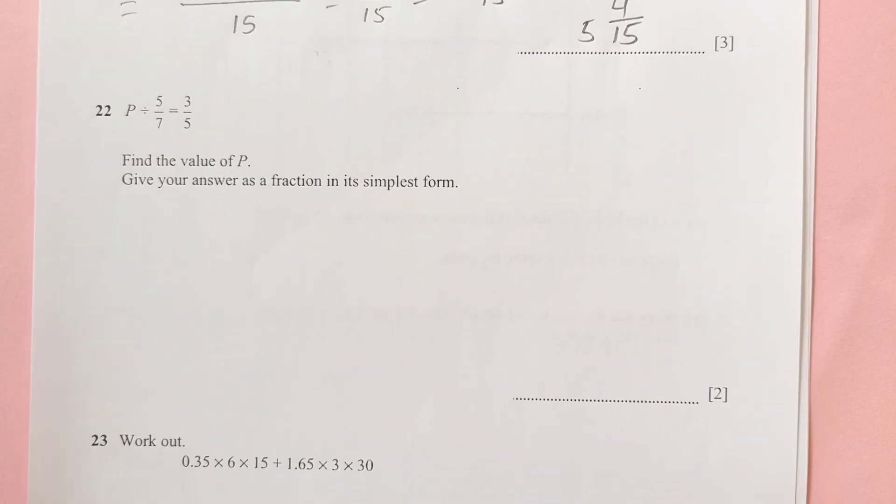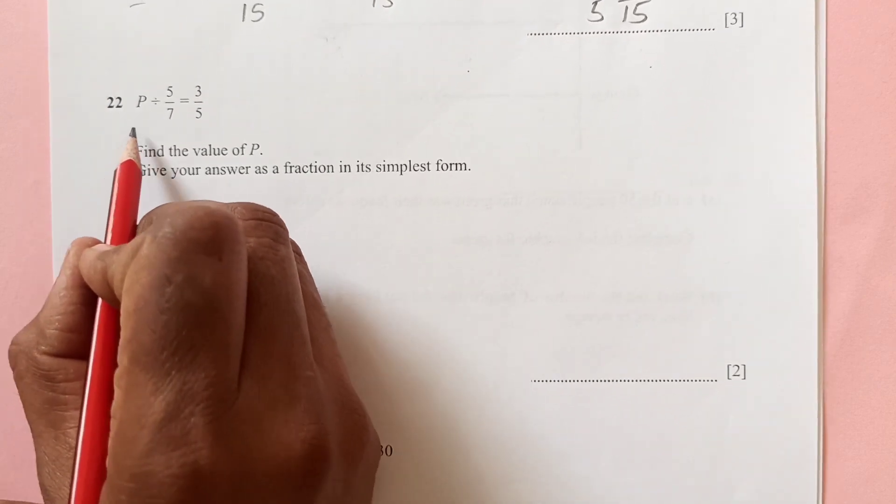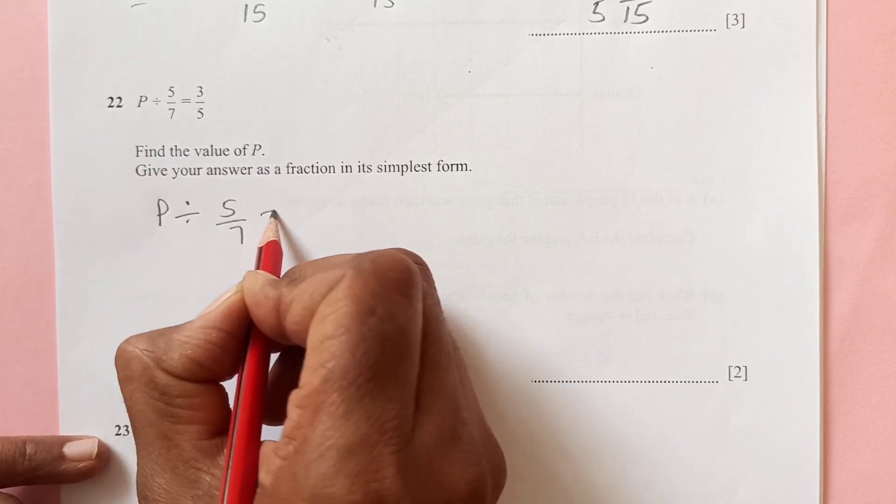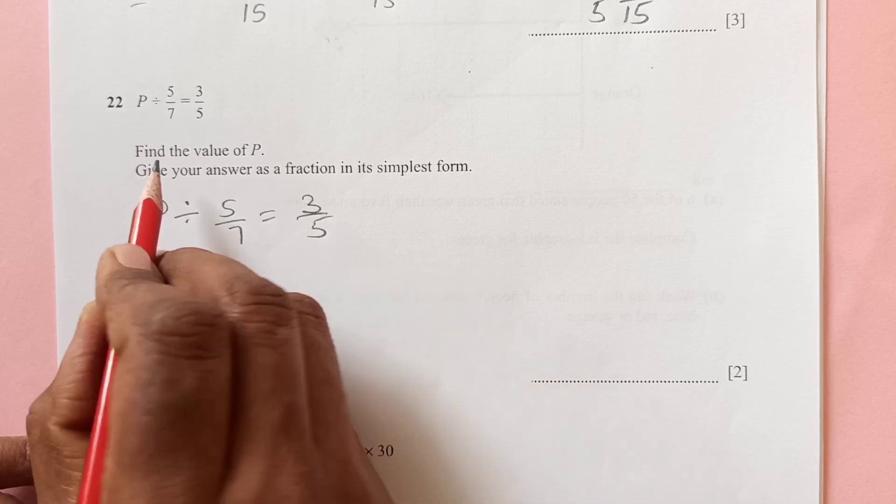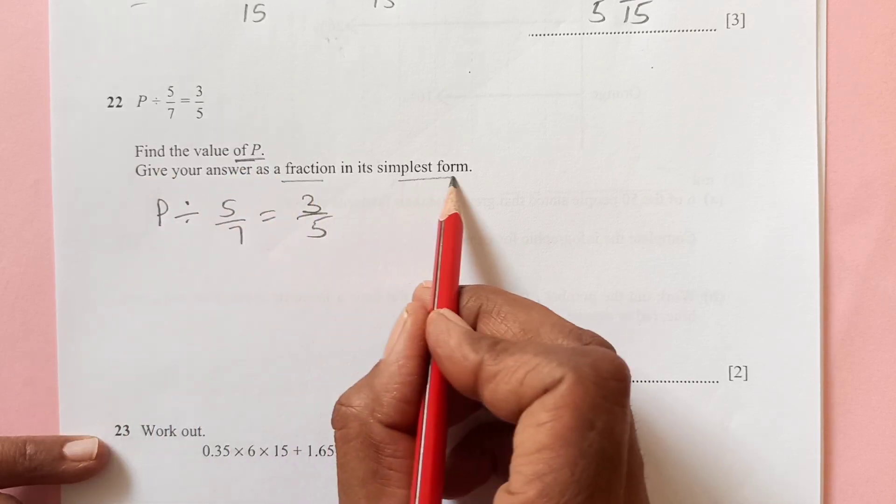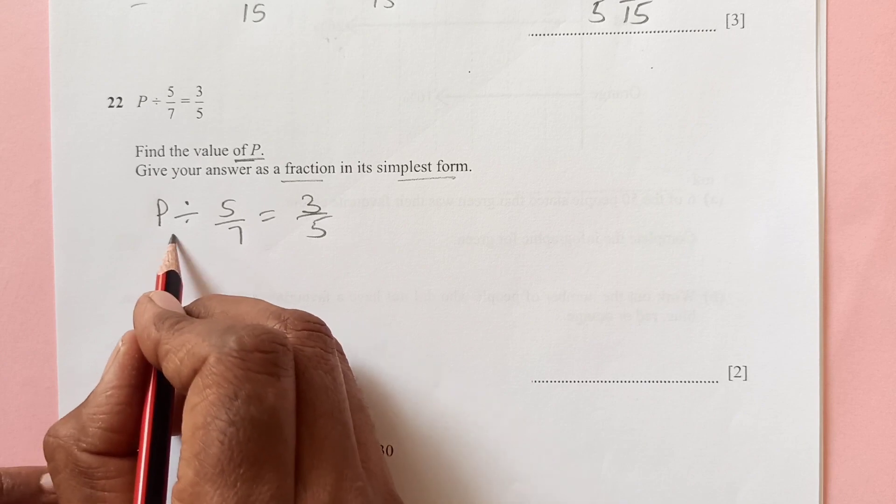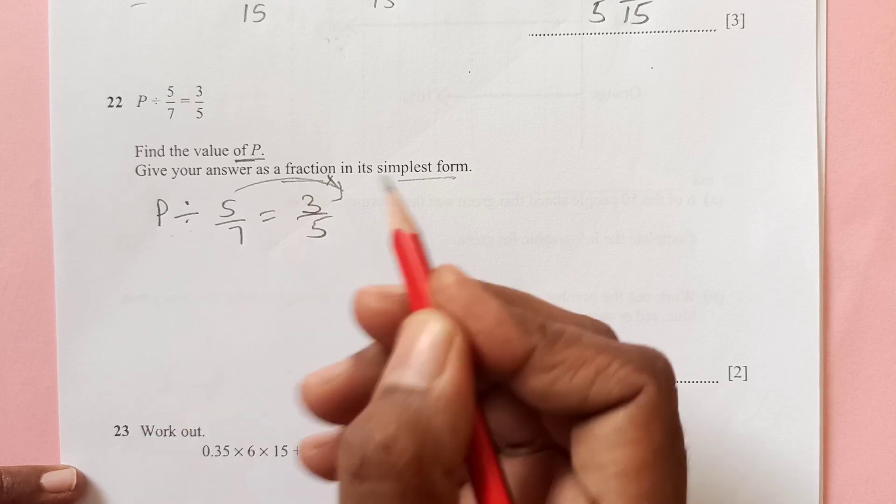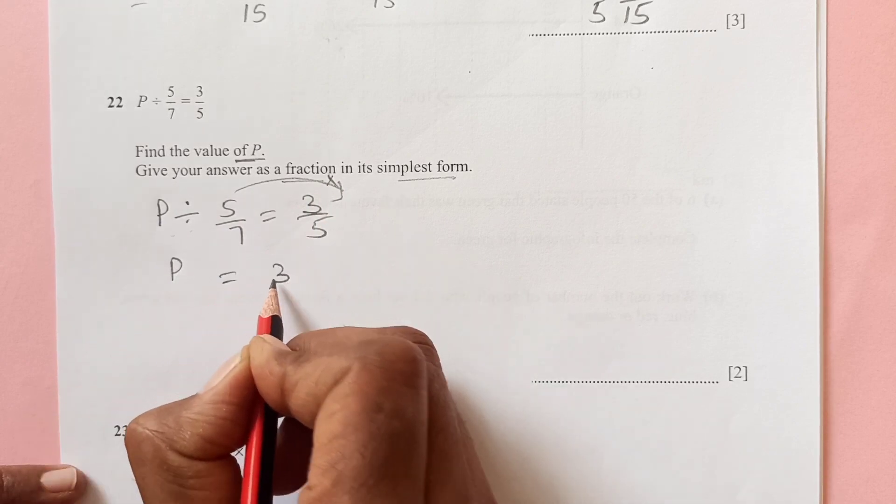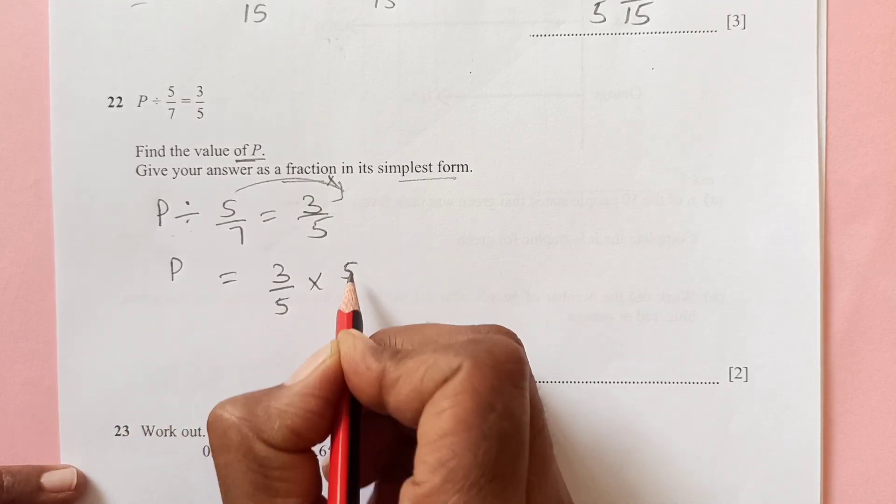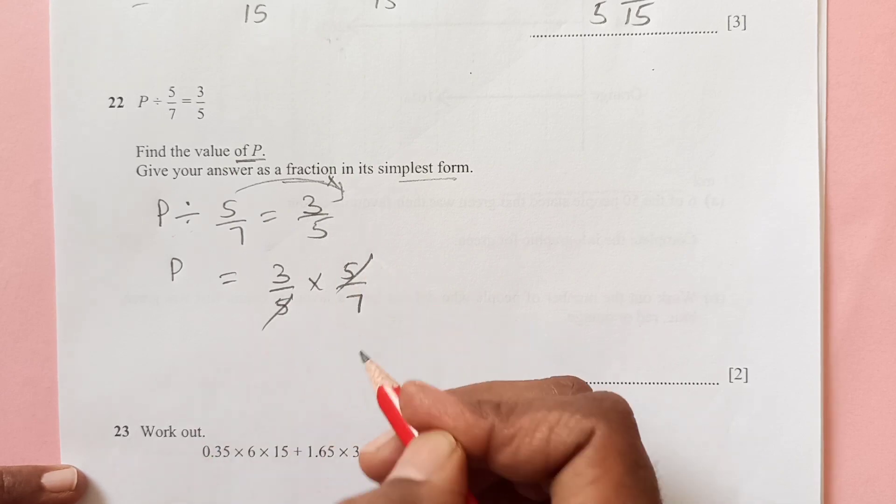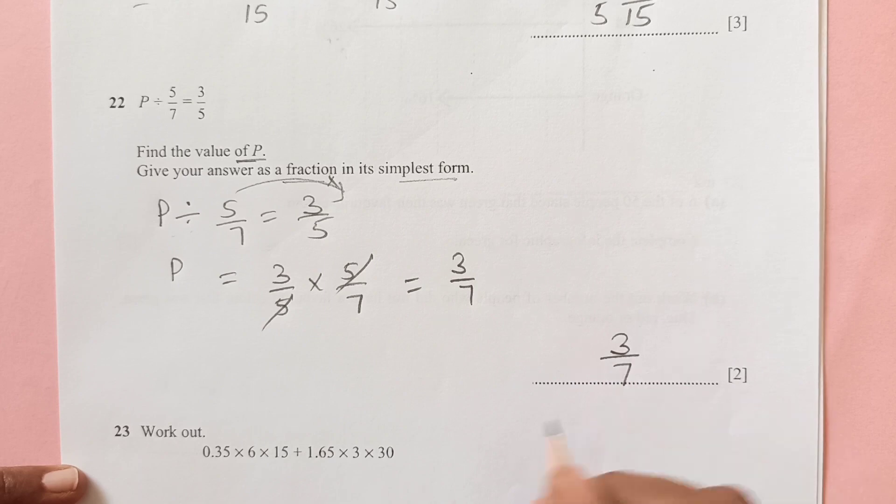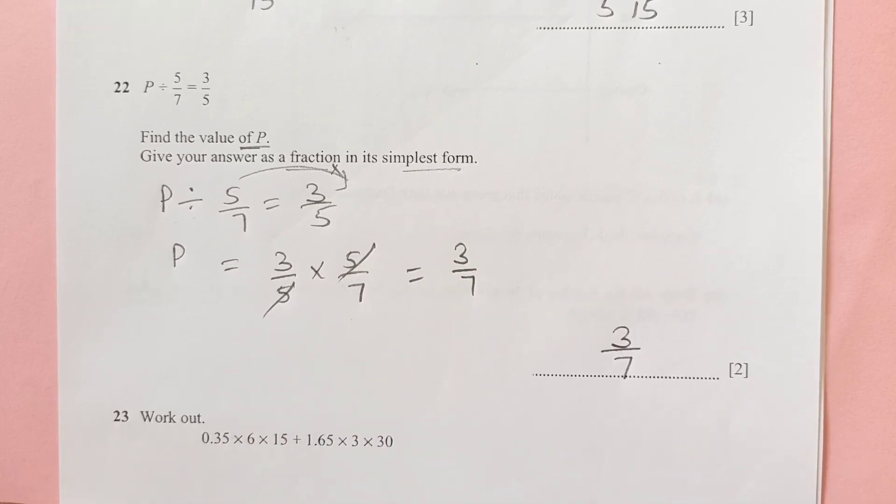Now number 22. P divides 5/7 to give 3/5. Find the value of P. Give your answer as a fraction in its simplest form. Now P divides this. So if I move this, it will become multiply on the other side. So 3 over 5 times 5 over 7. So 5 and 5 is cancelled. You are left with only 3 over 7, which is already in simplest form.